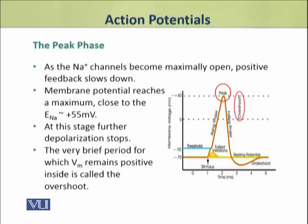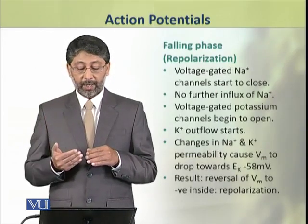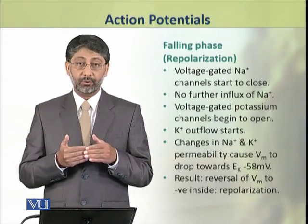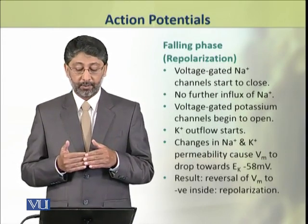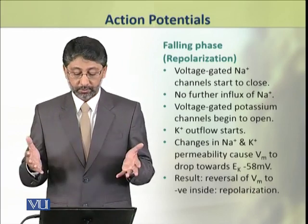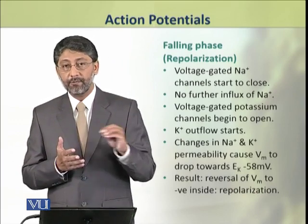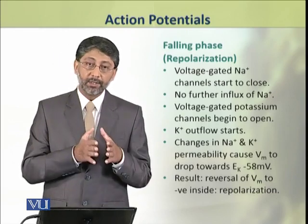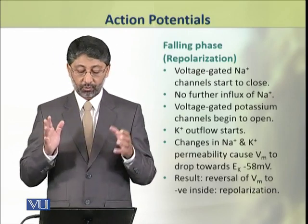During the peak phase, the membrane potential is in the positive range, which is called overshoot. After this peak phase, the falling phase begins and the membrane is repolarized. The voltage-gated sodium channels start to close, so no further influx of sodium ions occurs, while voltage-gated potassium channels start to open.